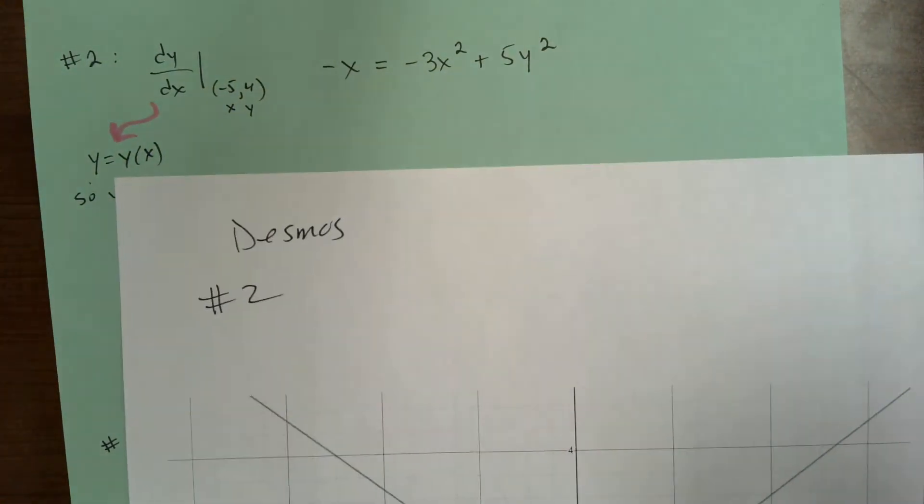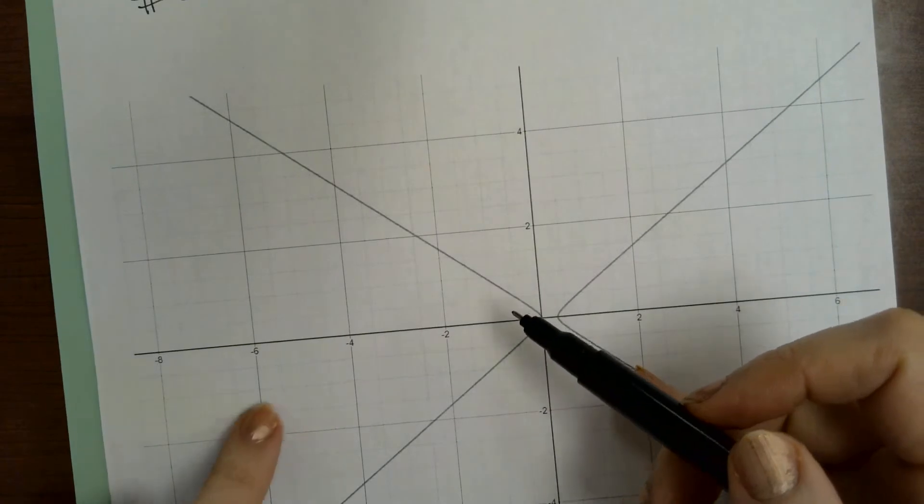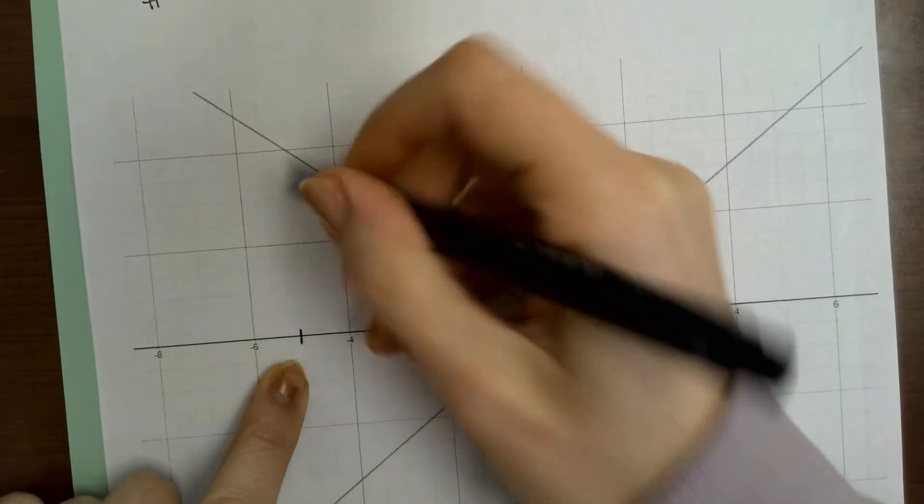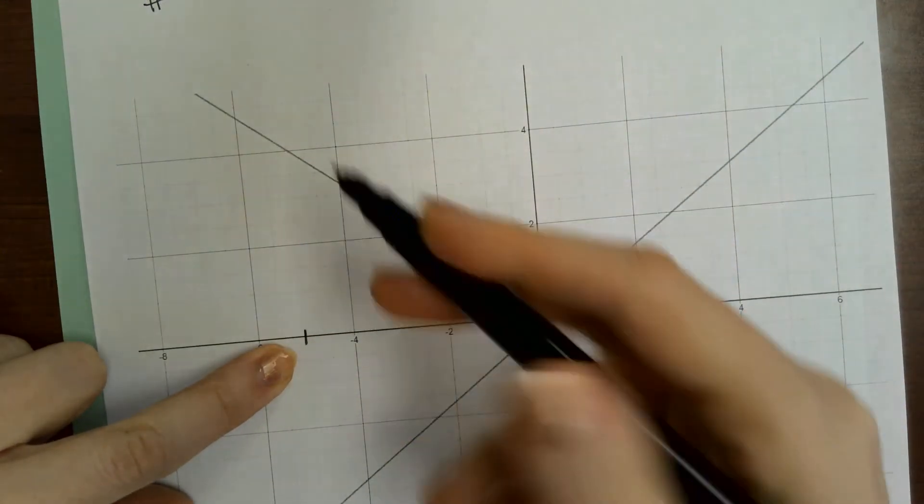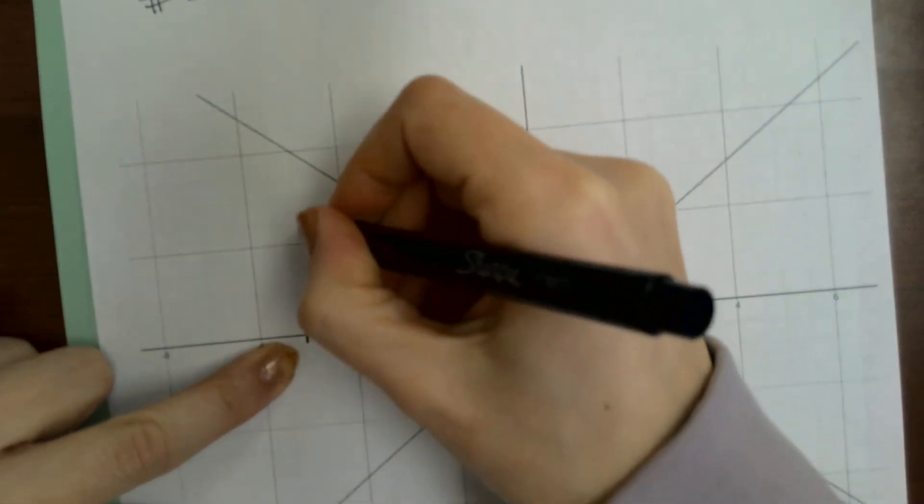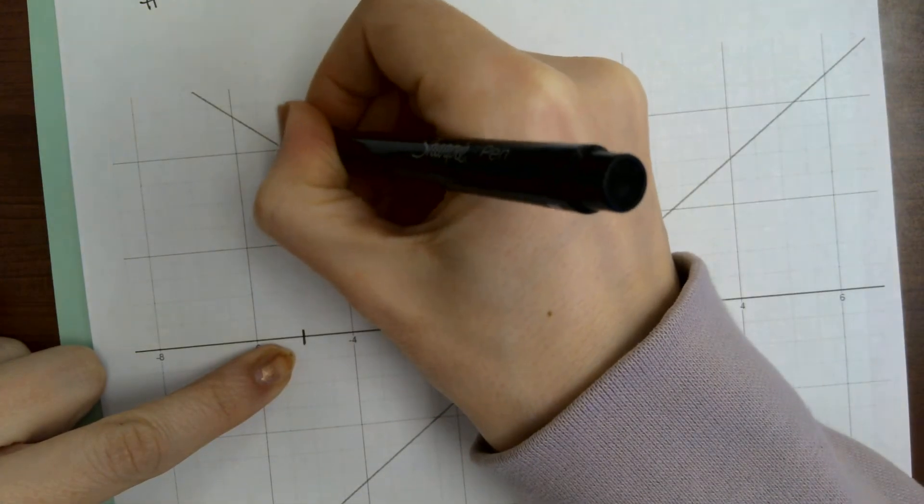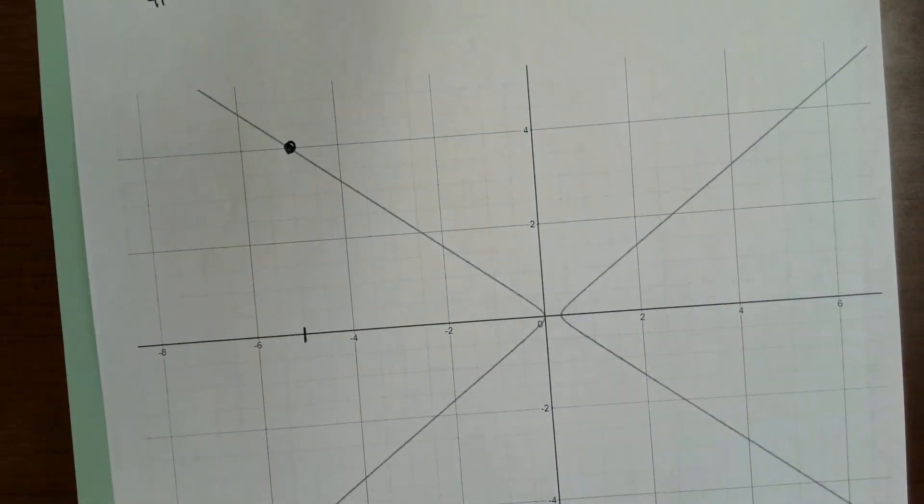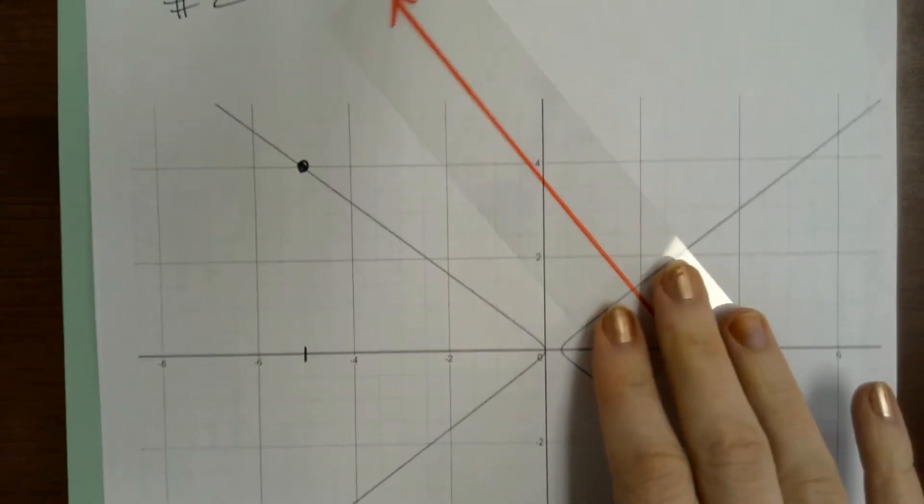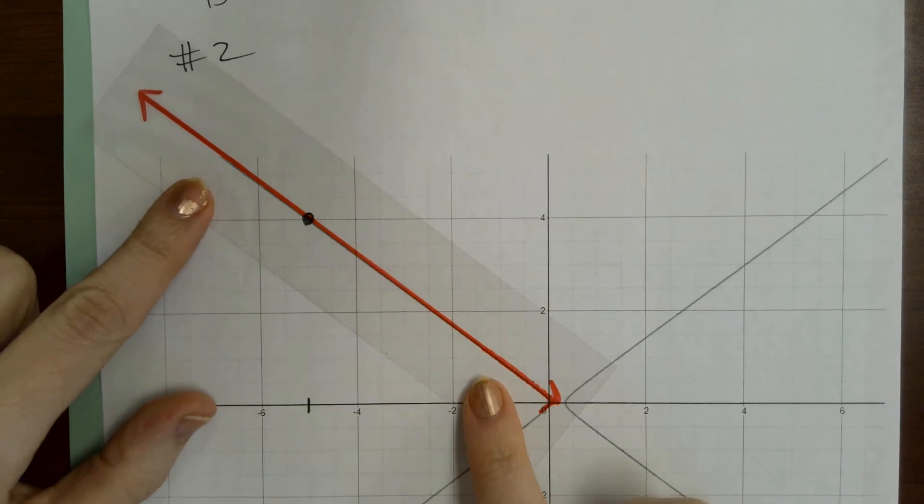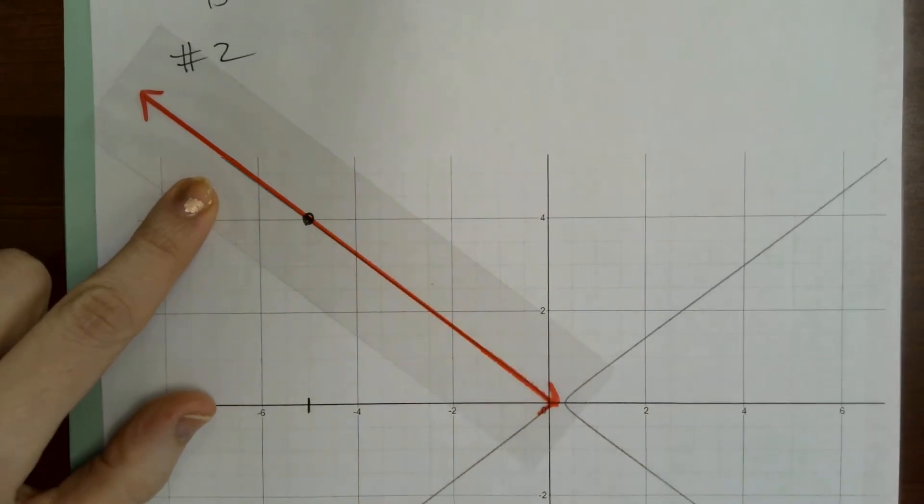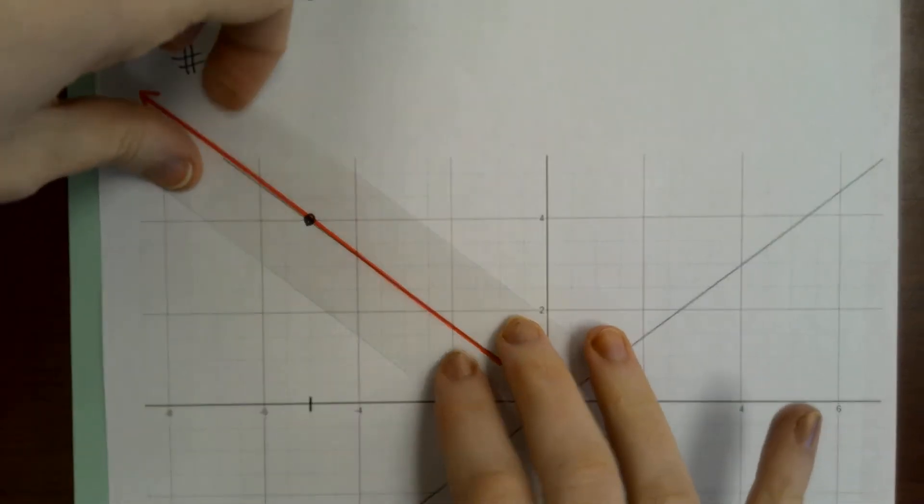So negative five, four. So there's negative five. And notice this input negative five has two outputs on the graph, but they're asking us to find the slope of the tangent line to the graph up here. And again, it looks like a straight line, but here's my tangent line. So I want to find the slope of that, that is the derivative is the slope of that tangent line.